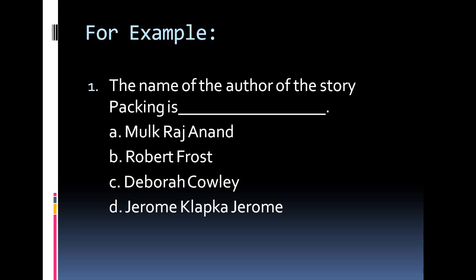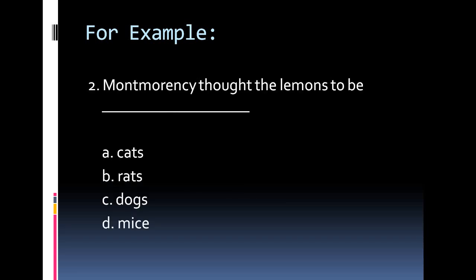Here is another type of question. Many students have a doubt about how English can be done through MCQ — this is how. Another type focuses on chapter detailing: 'Montmorency thought the lemons to be?' with options: cats, rats, dogs, and mice. Unless you read the chapter properly in detail, you won't be able to answer correctly. The answer is 'rats,' and you can only know this once you've read the chapter.